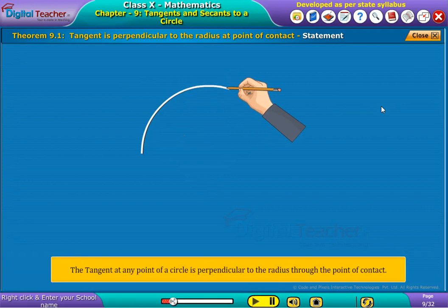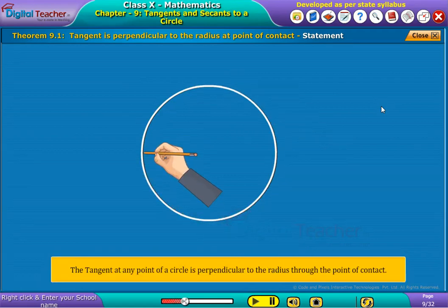Theorem states that tangent at any point of a circle is perpendicular to the radius through the point of contact.